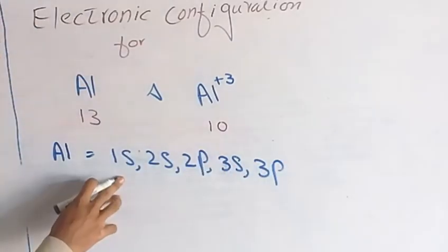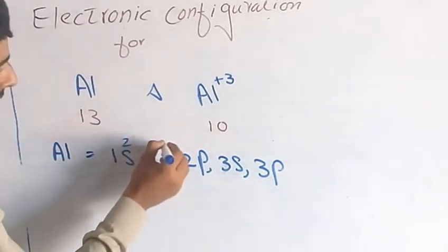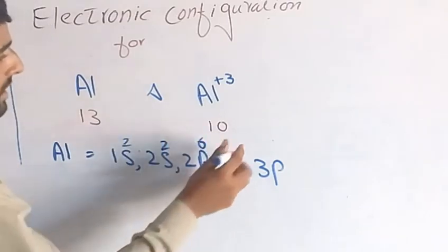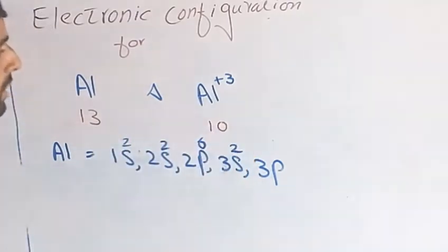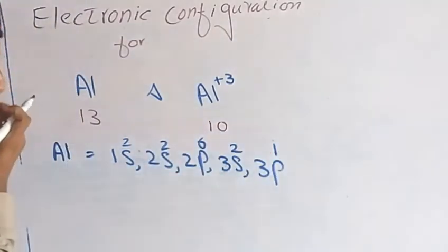So s subshell orbital means maximum two electrons. 2p means six electrons, 3s means two electrons, and 3p means one electron, total 13 electrons.